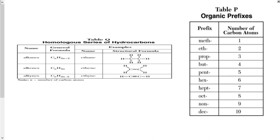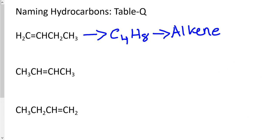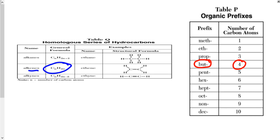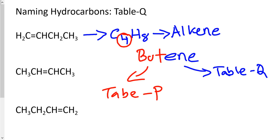If you look at reference table Q, you would realize that the total number of hydrogens in this example is exactly double the number of carbon atoms. Therefore it has to be an alkene where the suffix would be -ene. Since you have four carbons in total, using reference table P for prefixes, the prefix would be 'but' and therefore the name would be butene.